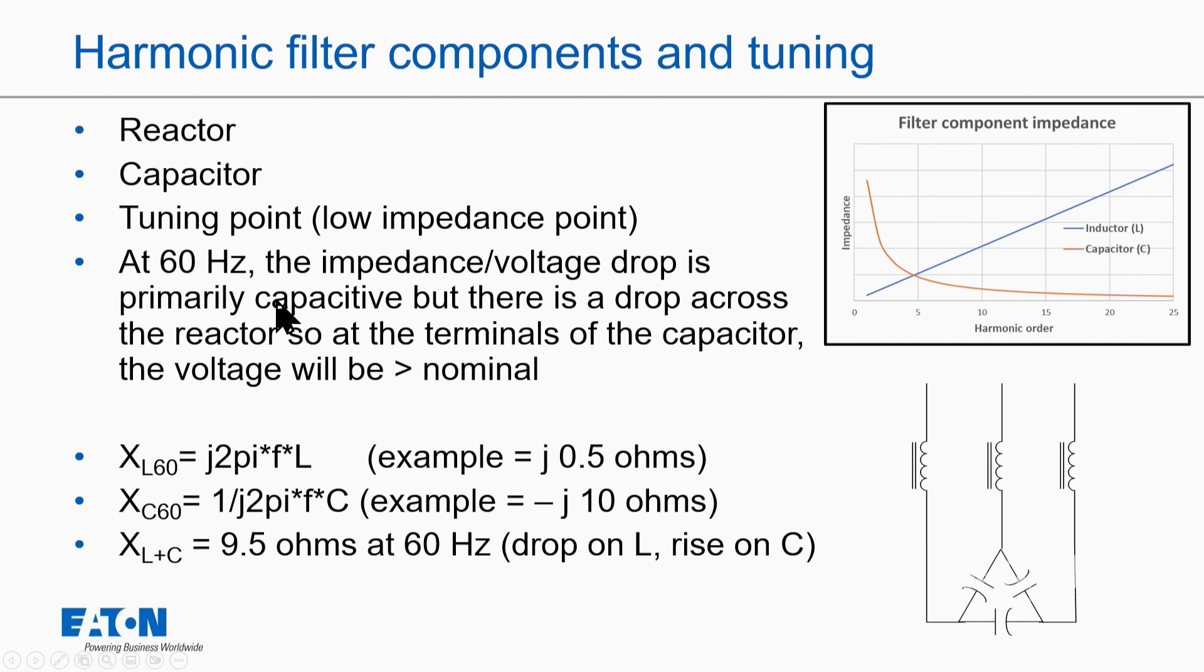At 60 hertz, the impedance or the voltage drop is primarily capacitive, but there's also a drop across the line reactor. So at the terminals of the capacitor, the voltage will be greater than nominal. What I mean by that is if I apply 480 from here to here, and here to here, and here to here, A to B, B to C, C to A,